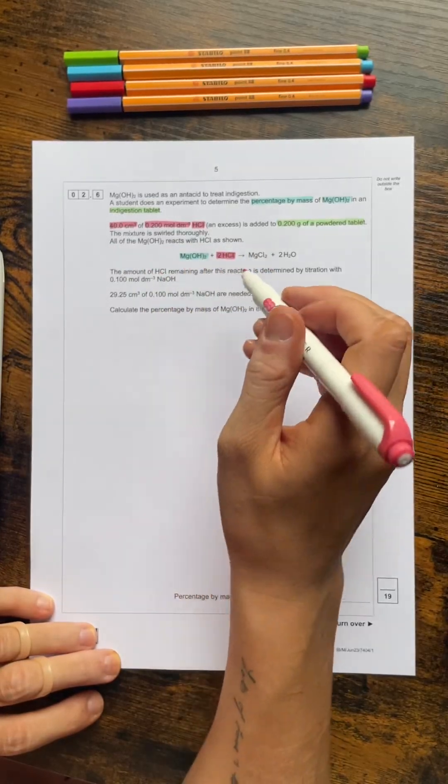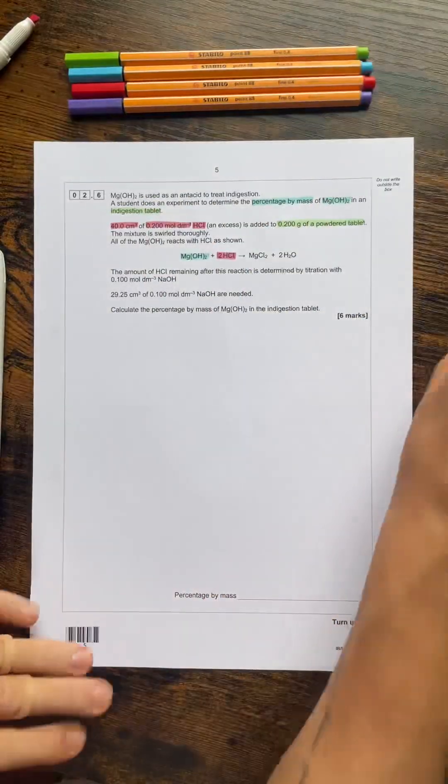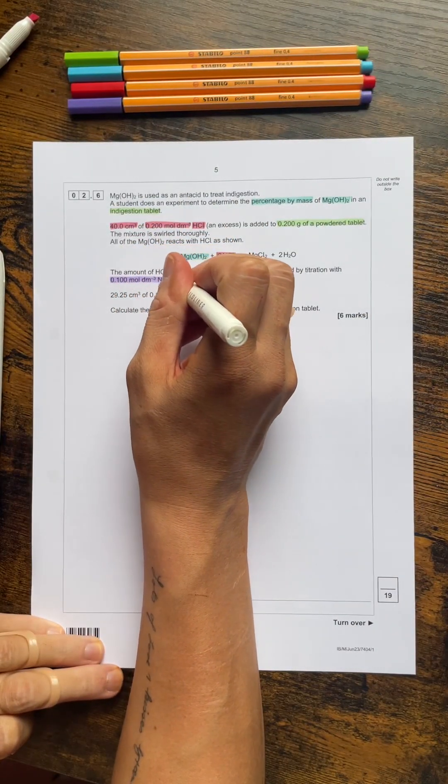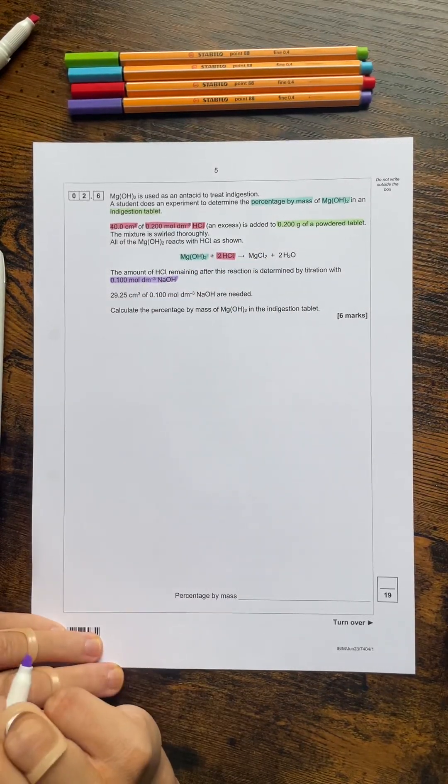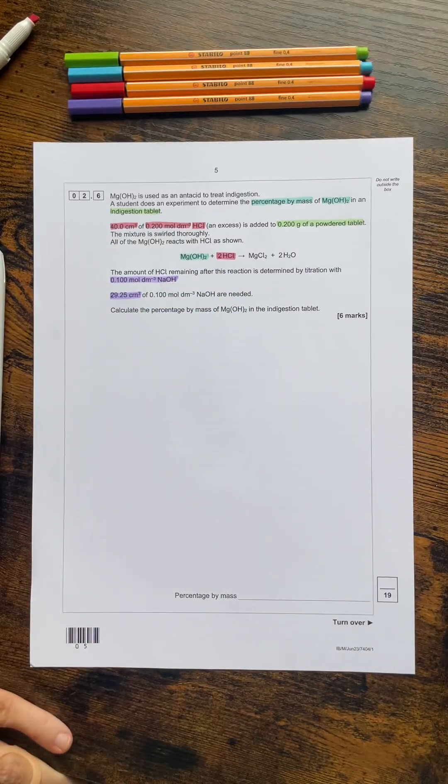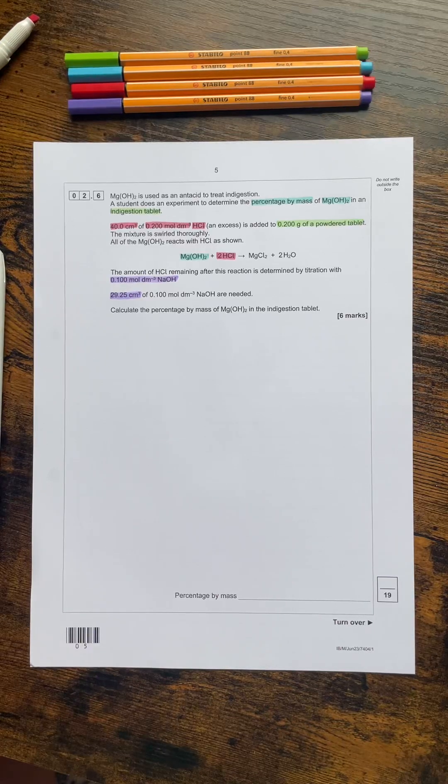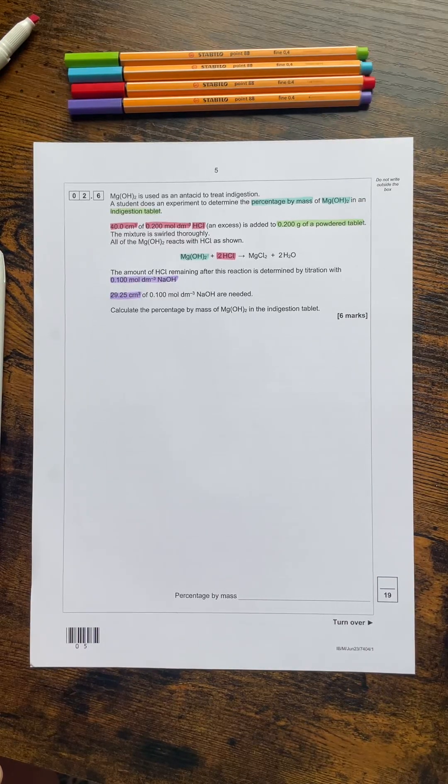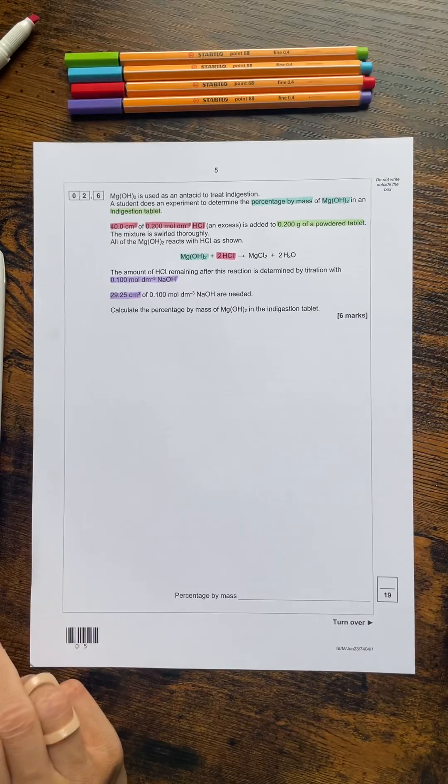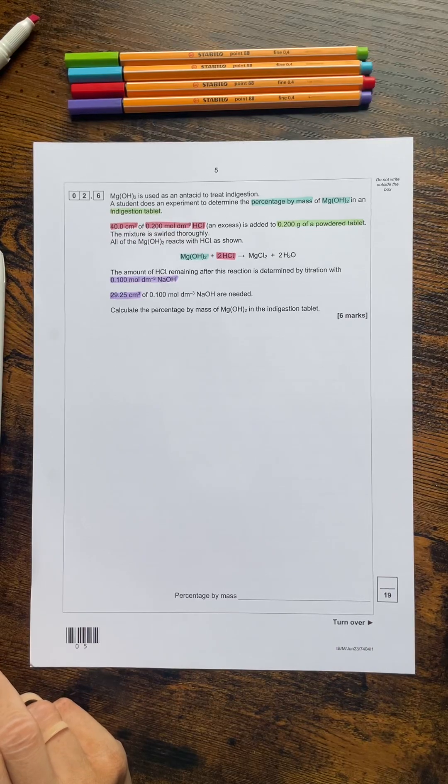The amount of HCl remaining is then determined by a titration with 0.1 mol per decimetre cubed sodium hydroxide. They haven't given us an equation for that so we will be writing one ourselves. We're also then told the volume of the sodium hydroxide that is needed to neutralise the amount of HCl that was remaining. And we've got to use all of that information as I said to calculate the percentage by mass of magnesium hydroxide in the indigestion tablet.